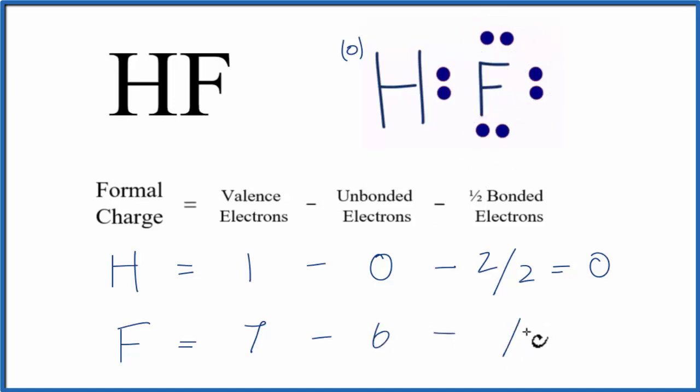And then we subtract one half of the bonded valence electrons. These 2 right here between the H and the F. 7 minus 6 is 1, minus 1, that gives us 0. So the formal charge on the fluorine, that's 0 as well.